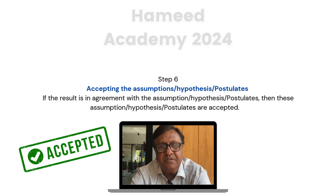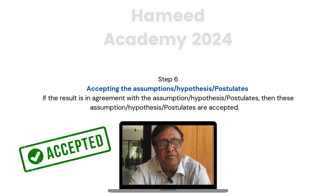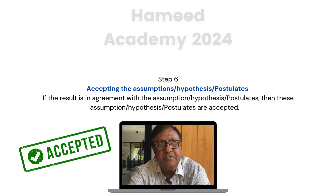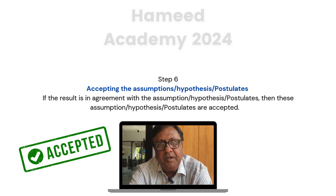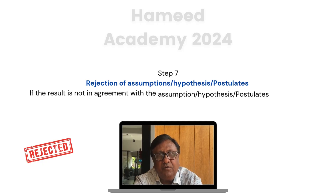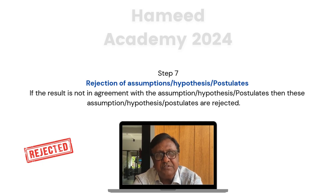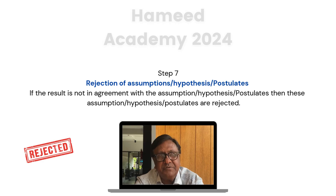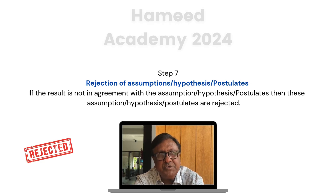If the result is in agreement with the proposed assumptions, postulates and hypothesis, these are accepted. The seventh step is rejection of assumptions, hypothesis and postulates. If the results obtained by experiments, research and measurements are not in agreement with the assumptions, postulates and hypothesis proposed, then these are rejected.